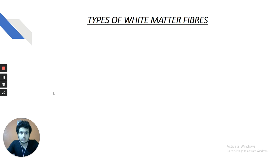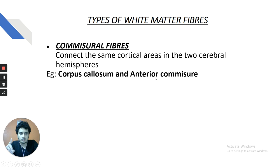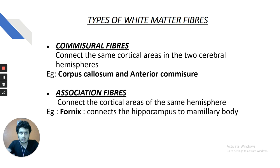There are three types of white matter fibers. Projection fibers connect cortical areas to subcortical areas — the internal capsule is the classic example. Commissural fibers connect the same cortical areas in two different cerebral hemispheres; examples include the corpus callosum and anterior commissure. Association fibers connect cortical areas within the same cerebral hemisphere; an example tested in AIIMS 2018 is the fornix, which connects the hippocampus to the mammillary body.